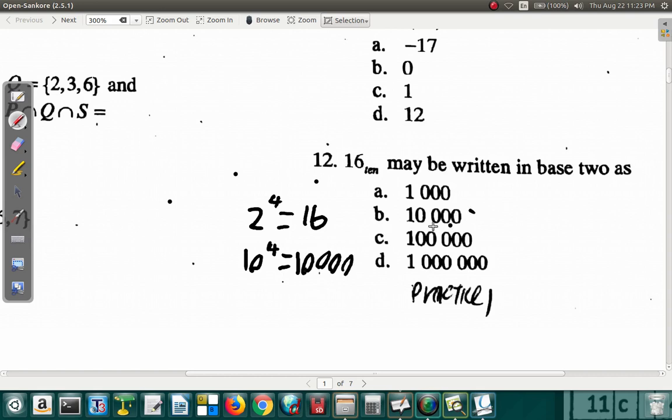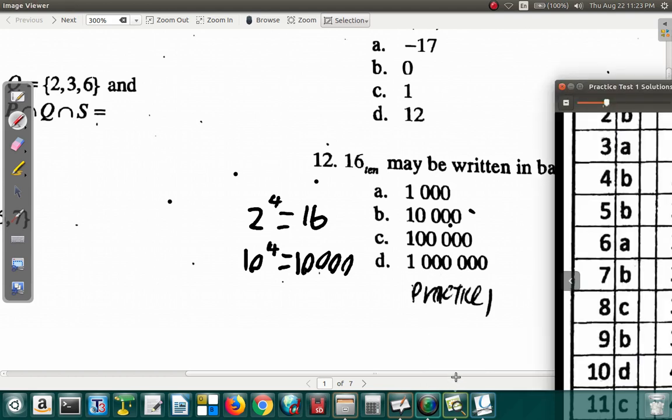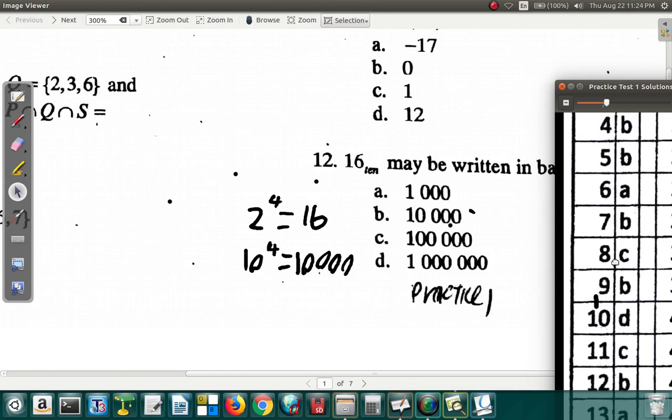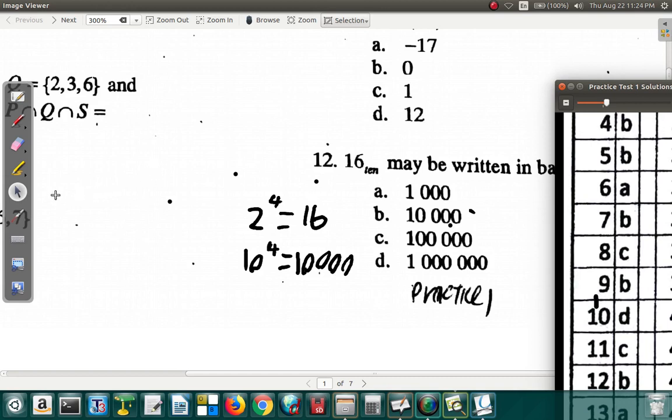1 and 4 zeros. So question 12, B. 1 and 4 zeros. But let's look at it another way.